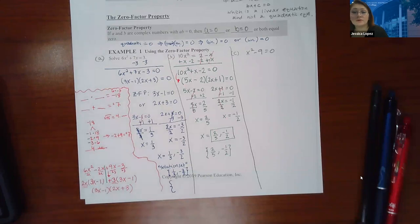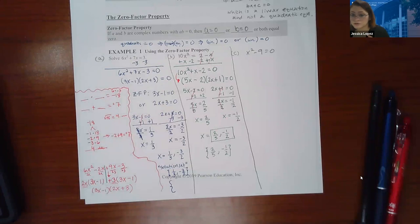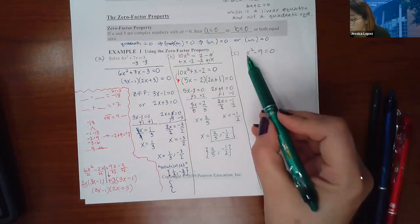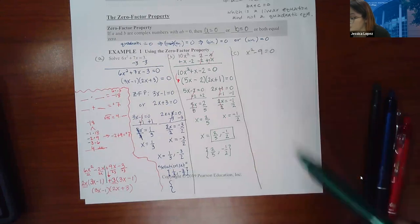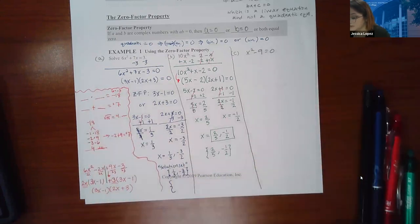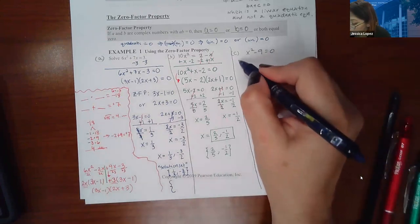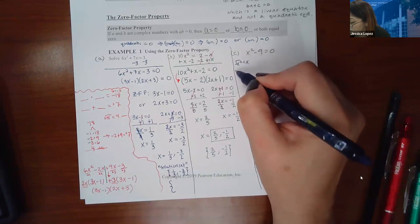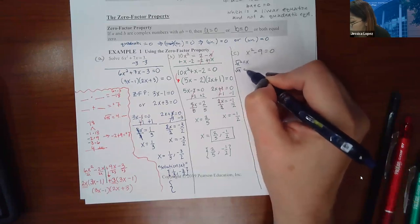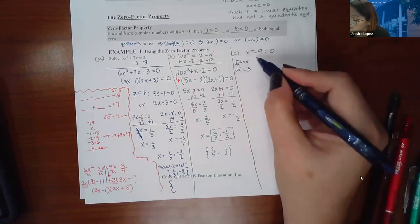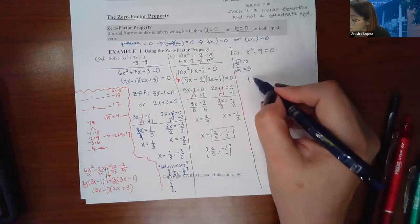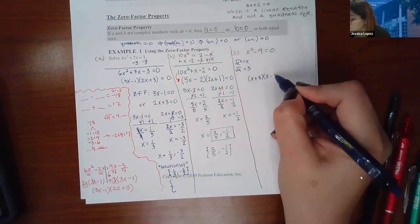For part C, it's the same thing except we learned about how to factor a difference of two perfect squares. The way we factor that is completely different from the AC method. We just say the square root of x² is x, and the square root of 9 is 3. So this factors into (x + 3)(x − 3).